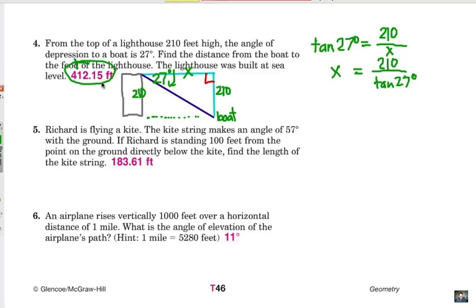Number five. Richard is flying a kite. The kite string makes an angle of 57 degrees with the ground, so there's our angle right there. If Richard is standing 100 feet from the point on the ground directly below the kite. So this distance right here is 100 feet. Richard is here, and right below the kite is here. Find the length of the kite string.